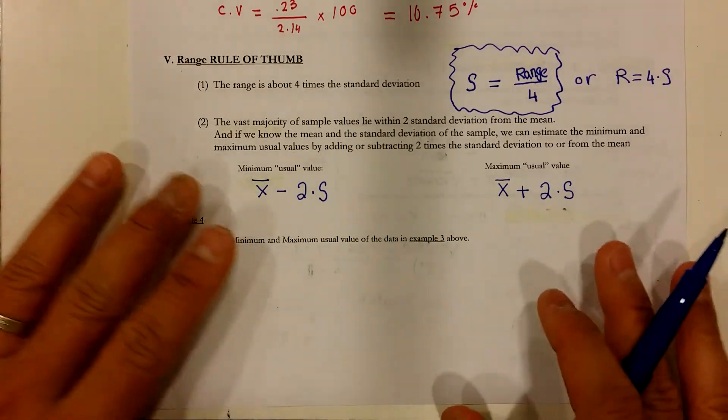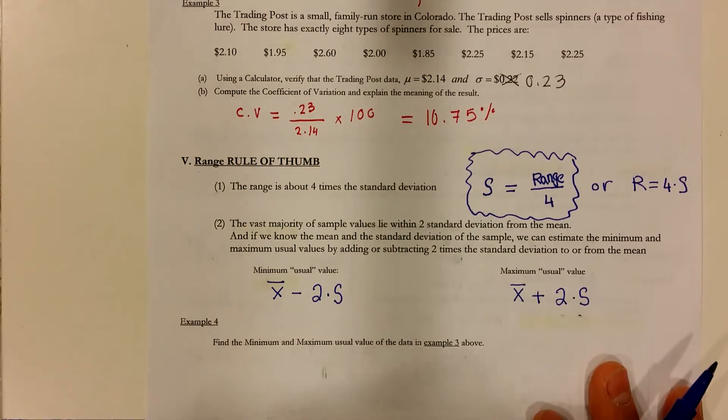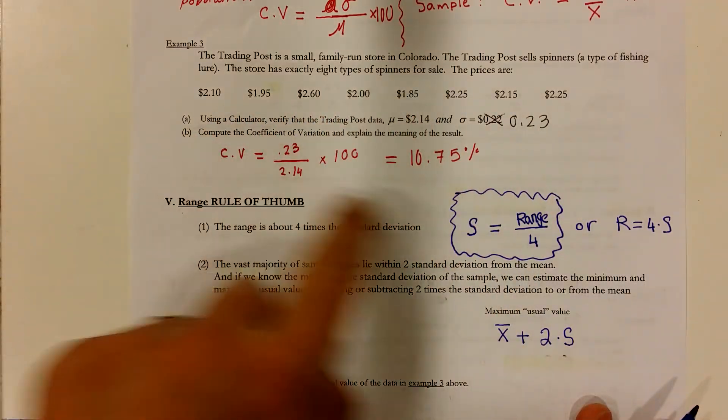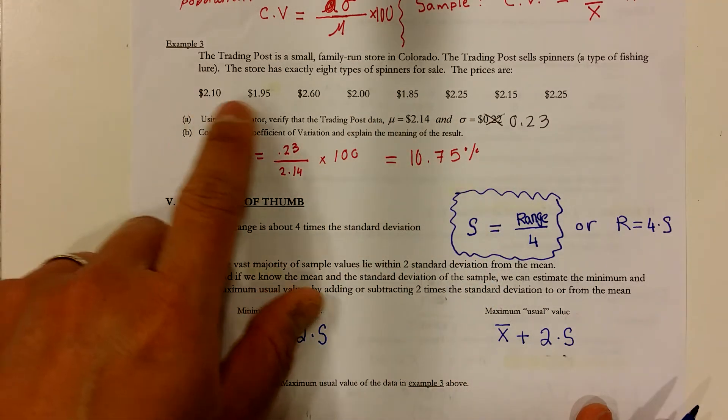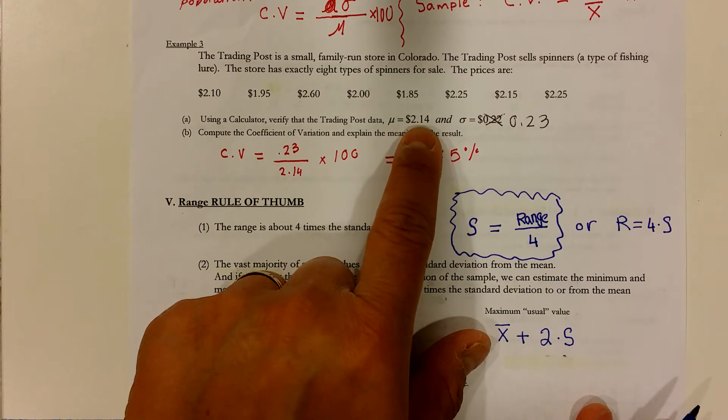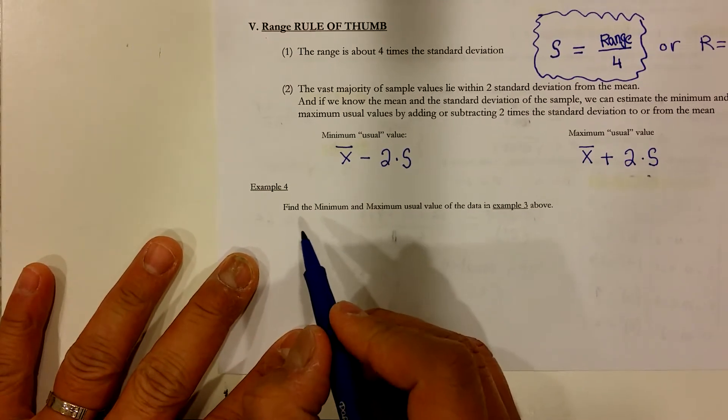So, in this data above, we have our prices and we also know that these are the prices of the spinners, the average selling price is $2.14. So, from that data, we know that the average,